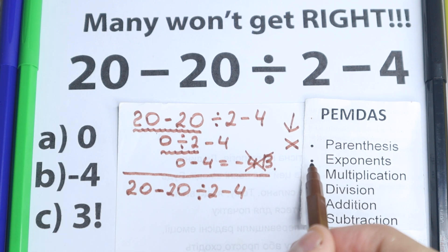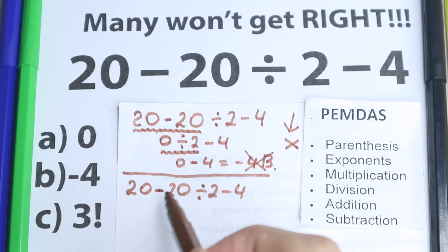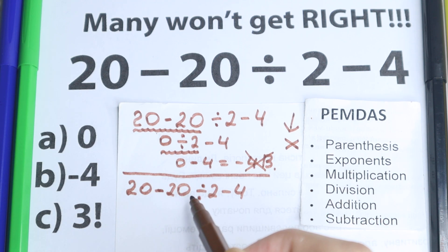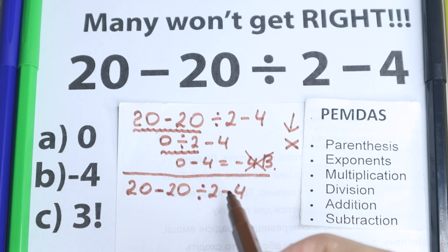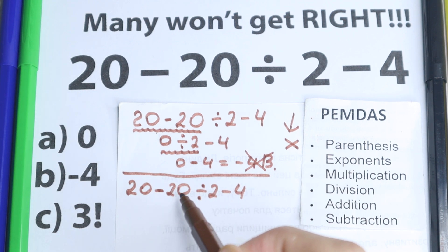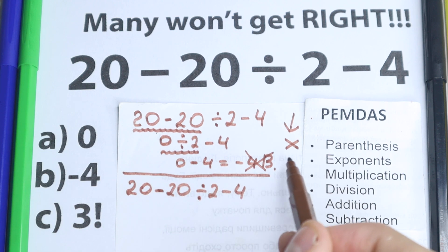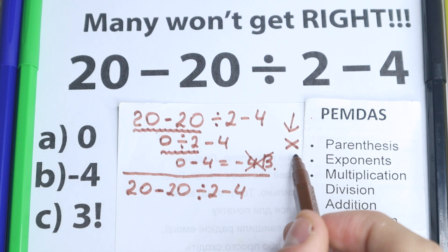Next step: exponents. I don't see any exponents — no cubes or powers. We have regular numbers without any powers, which is great. Imagine if you had 20 to the power of 20 — that would be very hard to evaluate. In our case we don't have any exponents, so we skip this part as well.